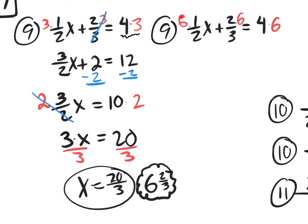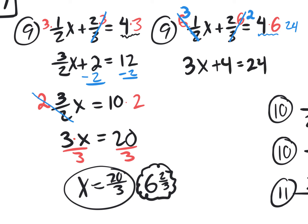Think about it: 6 on top divided by 2 on the bottom — 6 divided by 2 is 3. So put a 3 up on top, giving 3 times 1x which is 3x. For the other fraction, 6 divided by 3 is 2 — put a 2 up on top, giving 2 times 2 which is 4. And 4 times 6 is 24. So we got rid of both fractions at the same time.